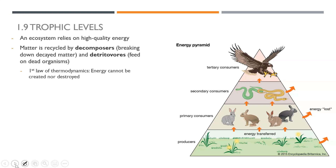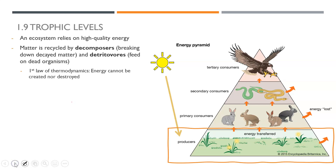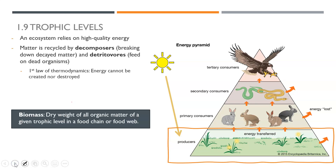We have our first law of thermodynamics: energy cannot be created nor destroyed. What's missing from this energy pyramid are our decomposers, which break down decayed matter, and the detritivores, which feed on dead organisms — they cycle those nutrients back into the food chain, just as we covered in our nutrient cycles. The sun hits our producers and then energy moves up the energy pyramid. Biomass is a term you'll see a lot — it's the dry weight of all organic matter at a given trophic level in a food chain or food web. The biomass of producers is greater than that of primary consumers.